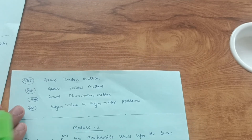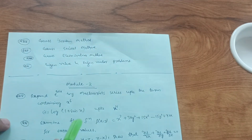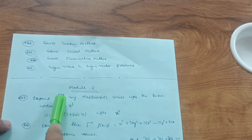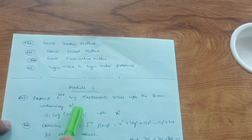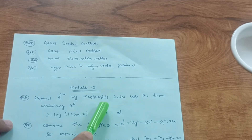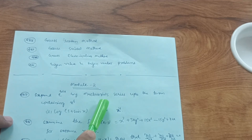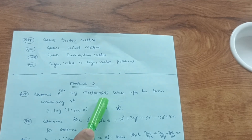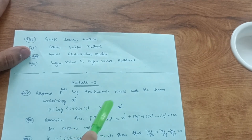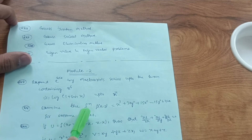In Module 2, you have to cover Maclaurin series. Expand e^(cos x) by Maclaurin series up to the term containing x⁶, and also log(1 + sin x) up to x⁴. Write out five problems from Maclaurin series — it is the most important part of Module 2, carrying seven marks, and it is the easiest question in that module.